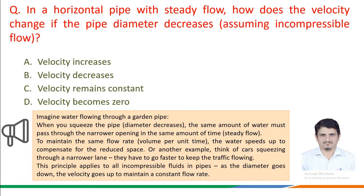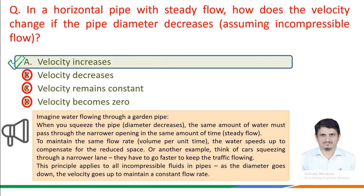With steady flow, to maintain the same flow rate, the water speeds up to compensate for the reduced space. Another example: think of cars squeezing through a narrow lane — they have to go faster to keep traffic flowing. This principle applies to all incompressible fluids in pipes. As the diameter goes down, the velocity goes up to maintain the constant flow rate. Therefore, the correct answer is: velocity increases if the pipe diameter decreases.